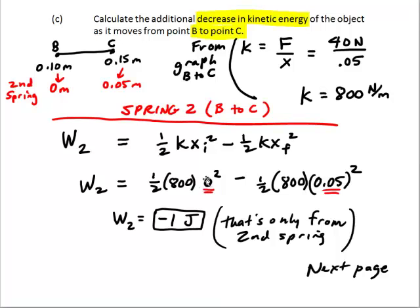And again, this is 0, not 0.1. So this goes to 0. And this is 1 over here. So the work done by the larger spring, the second spring, is negative 1 joule.